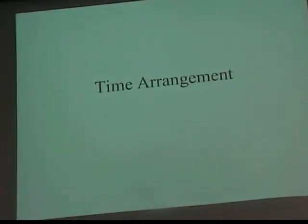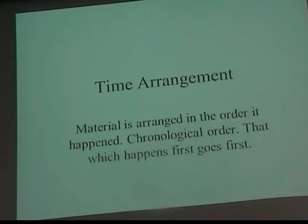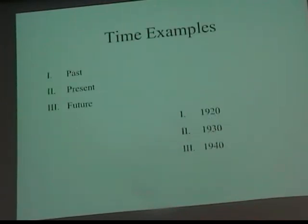First one: time arrangement. Very simply, the material is arranged in the order that it happened — it's called chronological order. That which happens first goes first. Two examples: past, present, and future; or 1920, 1930, and 1940. You need three points just to show that it's going in some direction.